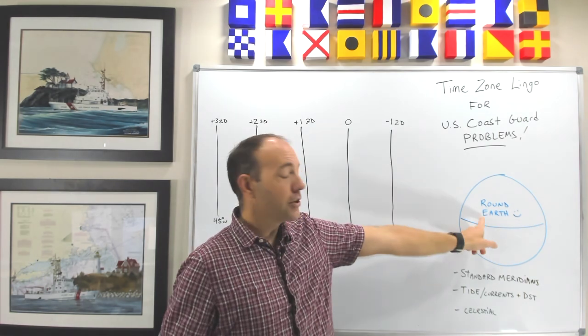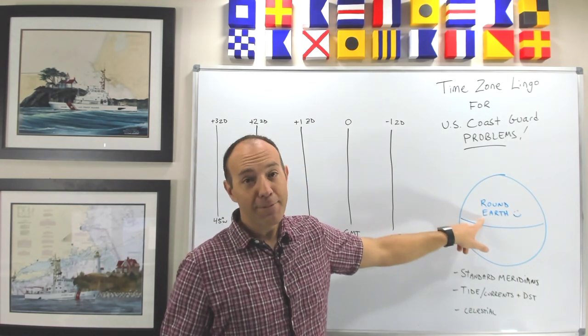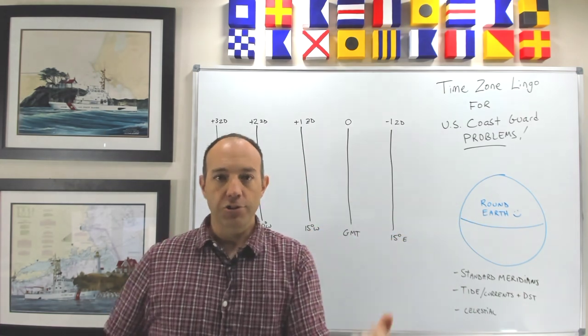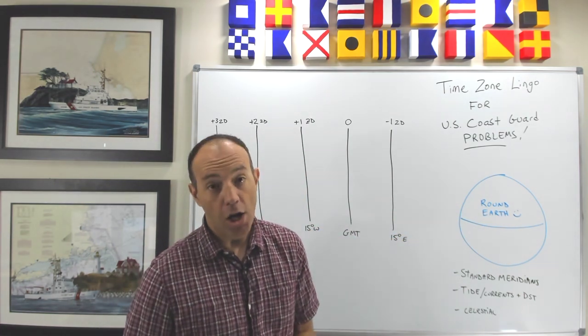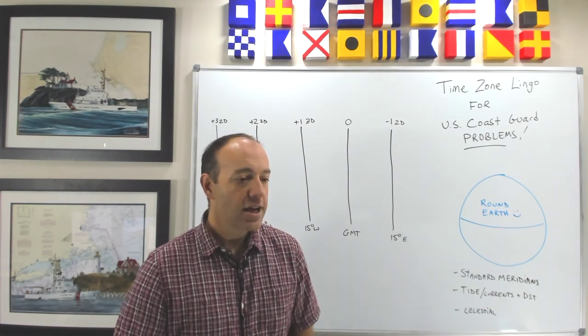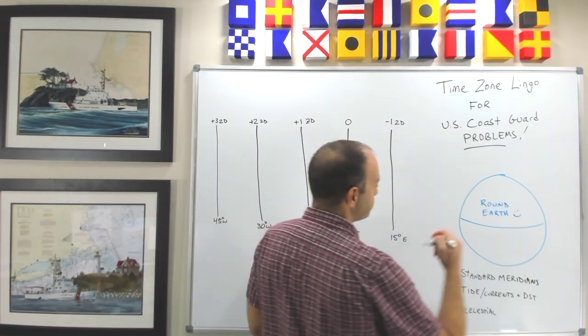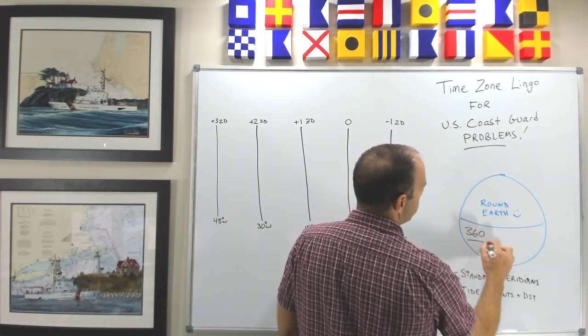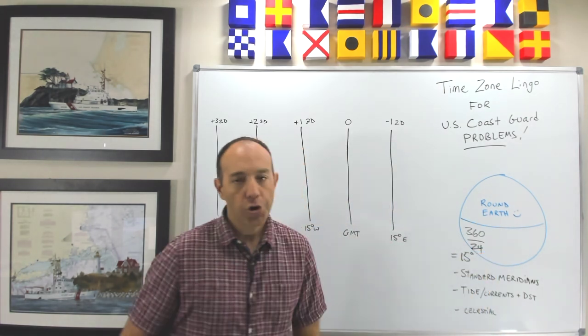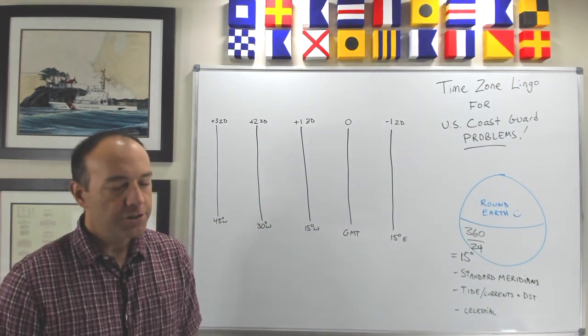First concept, the earth is round. If we're gonna have a debate about that please go to a different place. Alright so if the earth is round there's 360 degrees of longitude in the earth and there are 24 hours in a day roughly last time I looked. So if you take 360 divided by 24 you're gonna get 15 degrees per time zone.